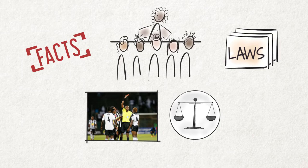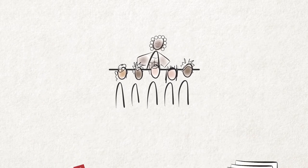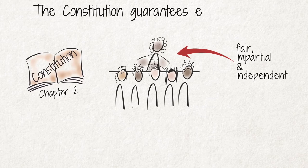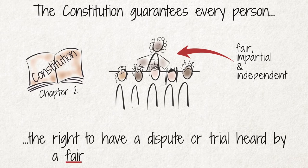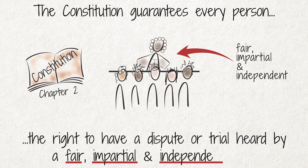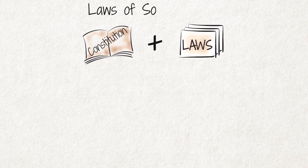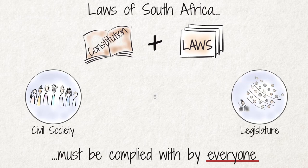But the task of the courts goes further — they must ensure that justice is done. Chapter 2 of the constitution guarantees every person the right to have a dispute or trial heard by a fair, impartial and independent court. It is the system's duty to make sure that the laws of South Africa are complied with by everyone, including the legislature and the executive.